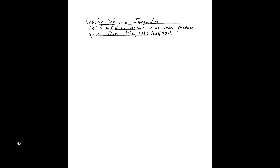In this video, we're going to talk about how we develop angle between two vectors in any inner product space. To make that work, we need to talk about what's referred to as the Cauchy-Schwarz inequality. You start with two vectors in the inner product space, and the absolute value of the inner product of u and v has to be less than or equal to the product of the magnitudes of u and v.